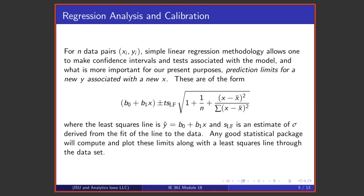If one then collects n data pairs and goes back to a basic text in elementary statistics, it's possible to find prediction limits for a new y that's associated with a new x. And the formula for such is this, where this is a value on the least squares line, that's a table t value, that's a standard deviation for regression analysis, and then that square root is the proper multiplier to hedge the prediction above or below the value on the least squares line. A good statistical package will compute and plot those limits along with the least squares line through the data set.